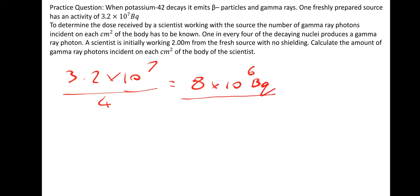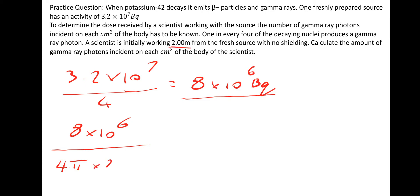Then we just need to do the same again — divide by the surface area of the sphere. So we divide 8 × 10⁶ by 4π, and the 2 metres we put into centimetres — so that's 200 squared. That gives an answer of 15.9 gamma photons per centimetre squared.